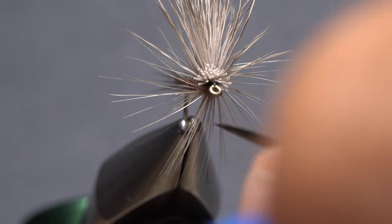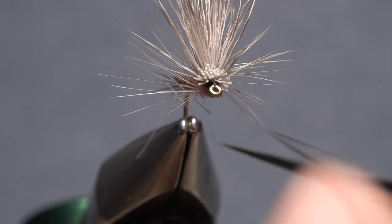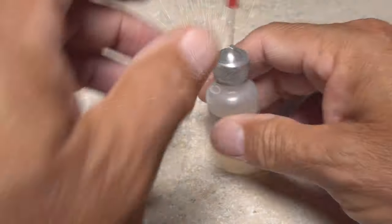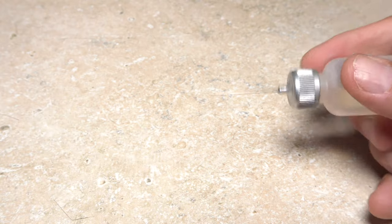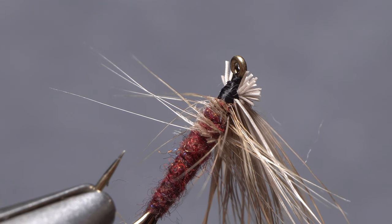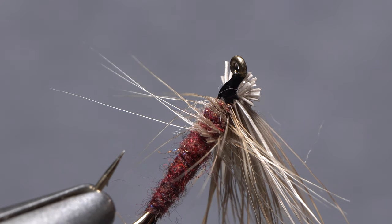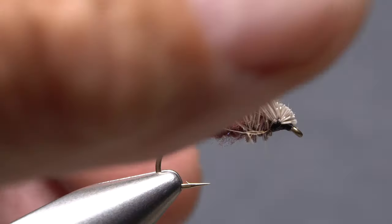Trim the hackle on the underside of the fly to help it ride flush in the water's surface. A drop of head cement, here Sally Hansen hard as nails, applied to the thread wraps on the underside of the hook will ensure they don't come unraveled and will also help to keep the deer hair wing centered on top of the hook.